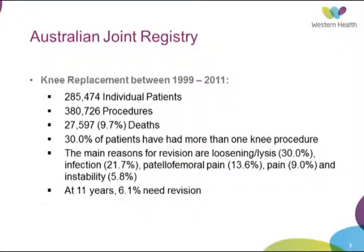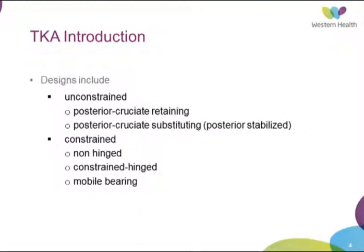In our joint registry between 1999 and 2011, there were 285,000 patients with over 380,000 knee replacements, with 9% deaths. 30% of people had more than one knee procedure done, and the main reasons for revisions were loosening up to 30%, infection 21%, and patellar pain. At 11 years, 6.1% needed revisions. Implant designs include constrained and non-constrained; posterior cruciate retaining has the best survival in our registry, whereas constrained versions have poorer survival.